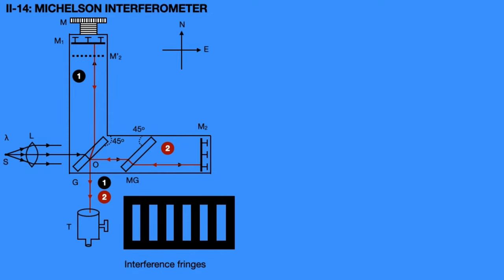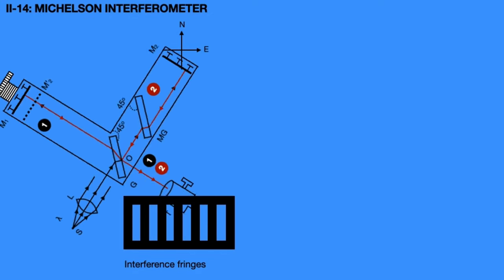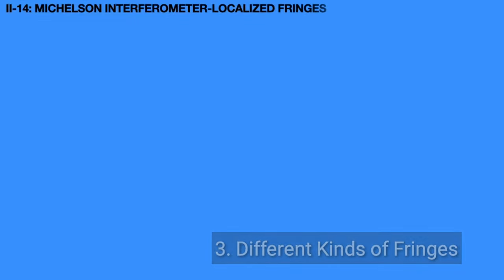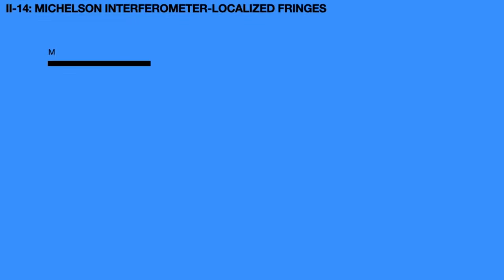When this interferometer undergoes a 90-degree rotation, the arms interchange their directions and a fringe shift occurs. Now we will discuss localized fringes. When the two mirrors M1 and virtual mirror M2' are inclined at some angle, an air film forms between them, producing a path difference. Hence, different kinds of fringes are formed, and these are called localized fringes.